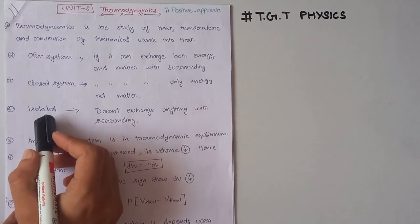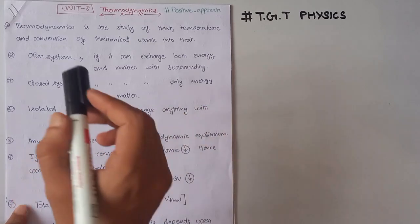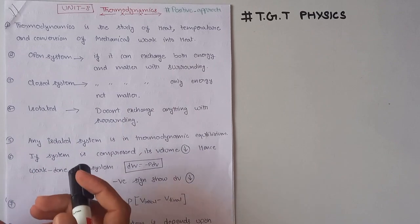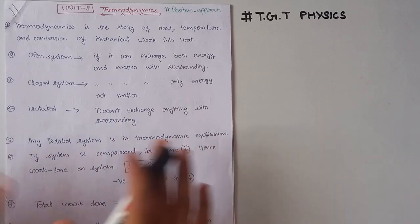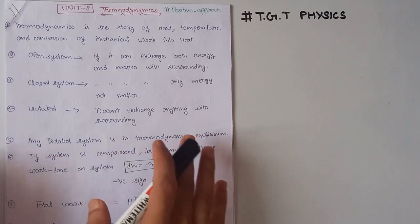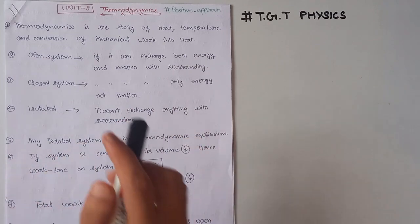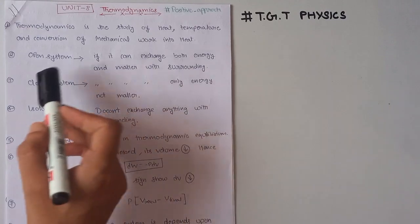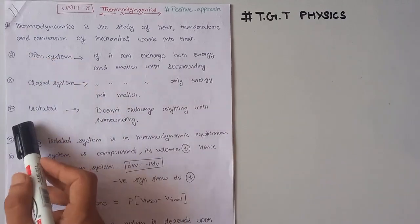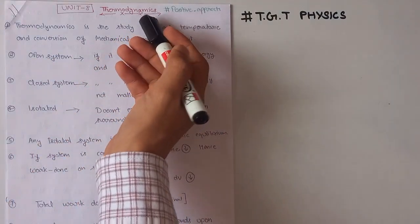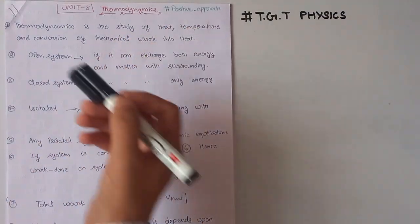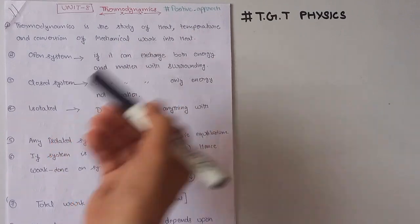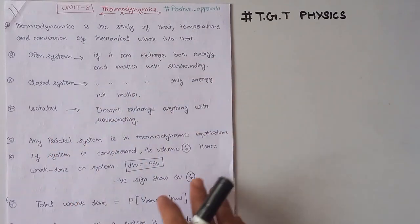In an isolated system, neither energy nor matter is exchanged with the surrounding. Anything that doesn't exchange anything with the surrounding is known as an isolated system. So these are the three systems of thermodynamics: open system, closed system, and isolated system.